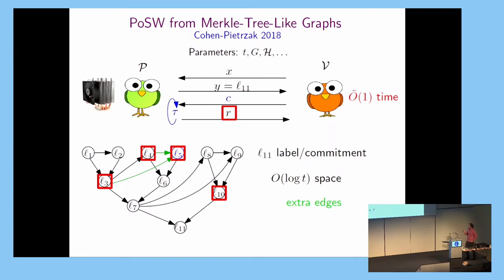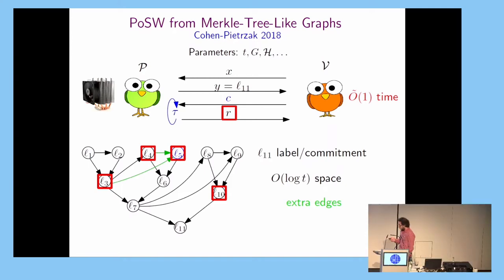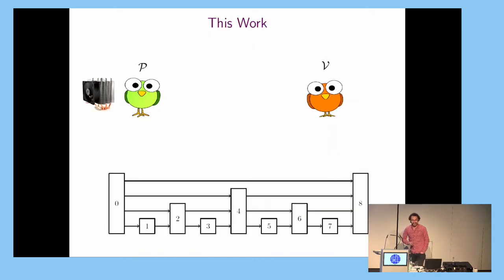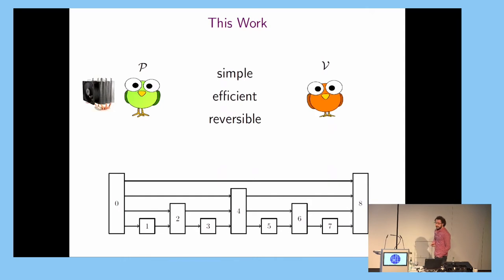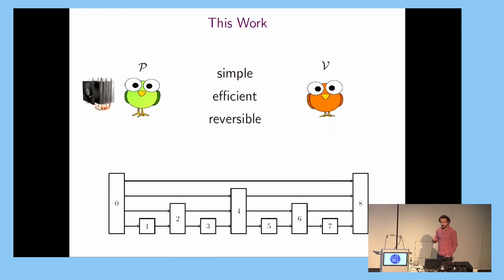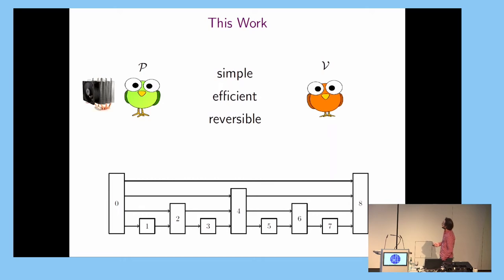So far this is practical, nice, and good — sufficient for our previous work. Now let's talk about the current work. We want a construction as simple as a skip list. The construction is very simple to explain and nearly as efficient as the previous construction. On top of that, it has the nice feature of reversibility, which gives us added value in these proofs of sequential work.